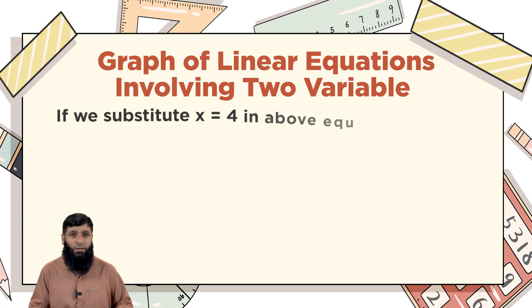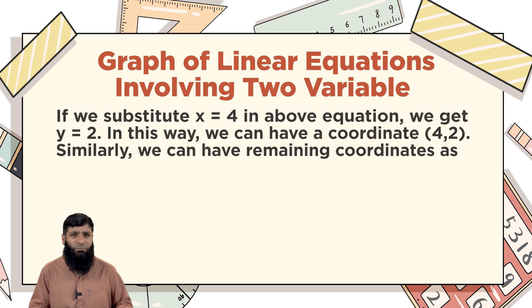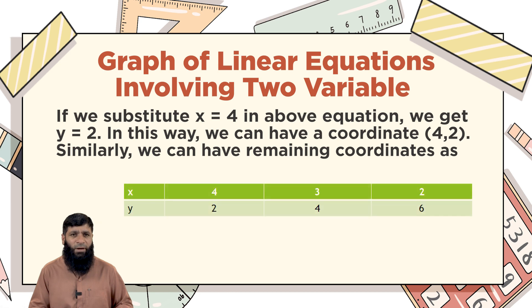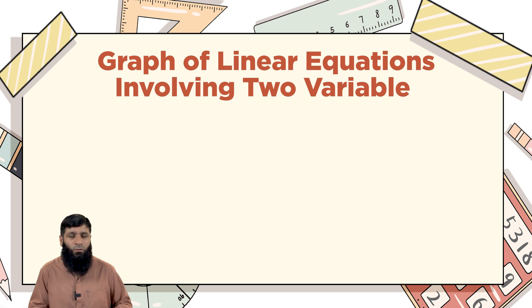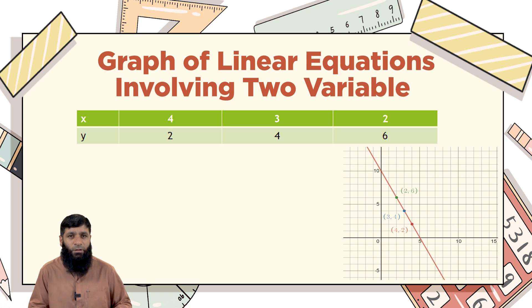Since you have two variables, you need to construct a table of coordinates. We select three values for x. If x = 2, we get y = 6. If x = 3, we get y = 4. If x = 4, we get y = 2. So we have three coordinates: (2, 6), (3, 4), and (4, 2). Note that y is a dependent variable and x is an independent variable.